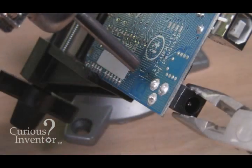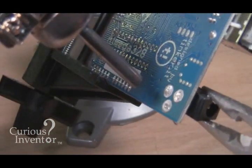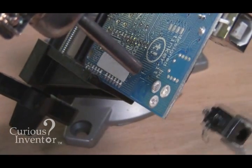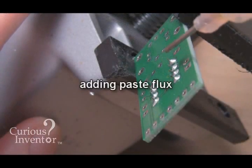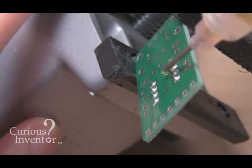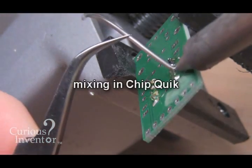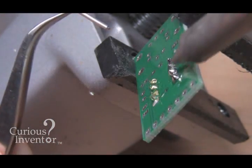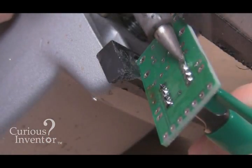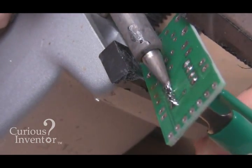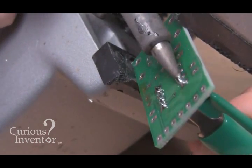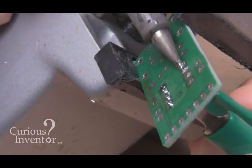For components with more than two leads, a hot air tool can be used to get all pins molten at once. A special low melting point solder called chipquick will let you do the same thing with a normal iron. Just melt in some chipquick into every joint, alternate between each joint to keep them all molten, and then pull the whole part out. The chipquick allows you to keep every joint liquid all at once.